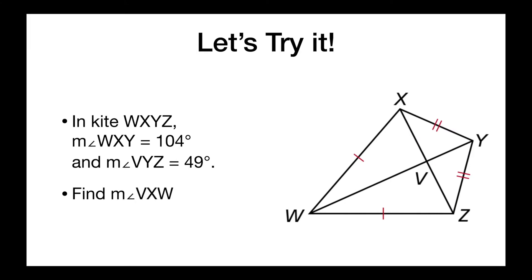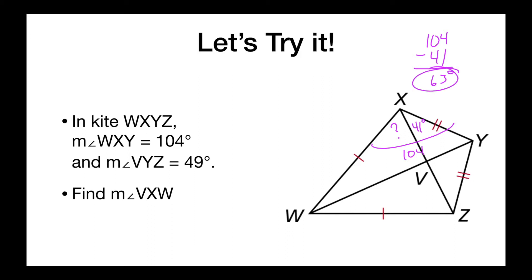Now we have the same kite but we're looking for angle VXW. The first thing we need to remember is that this corresponding angle is also 41 degrees. If we know that this is 41 degrees and the whole angle WXY is 104, we do 104 minus 41, which gets us 63 degrees for angle VXW.